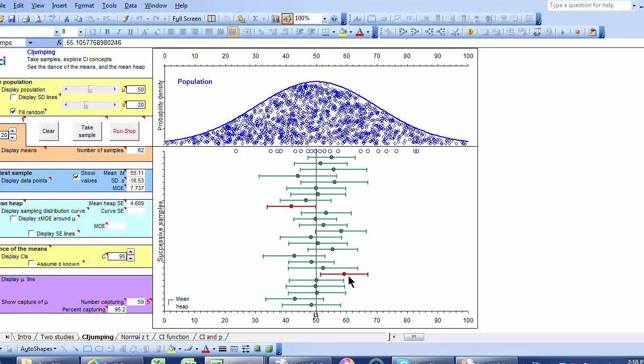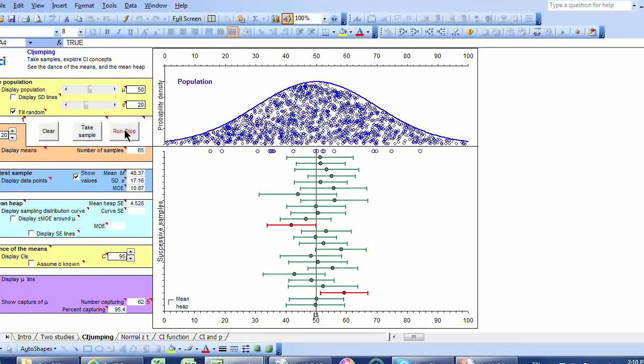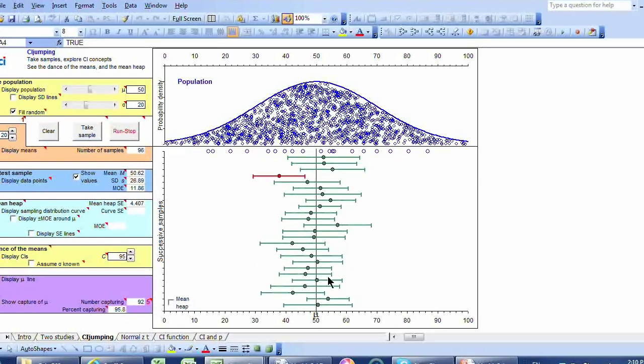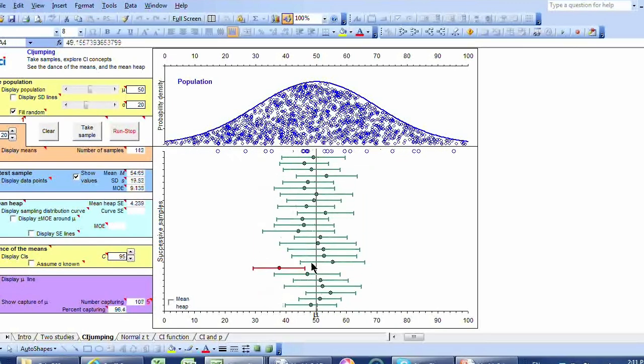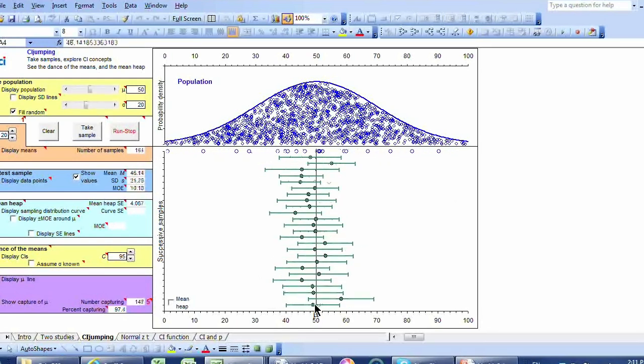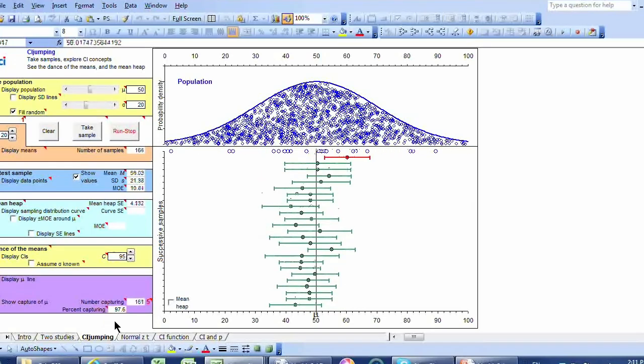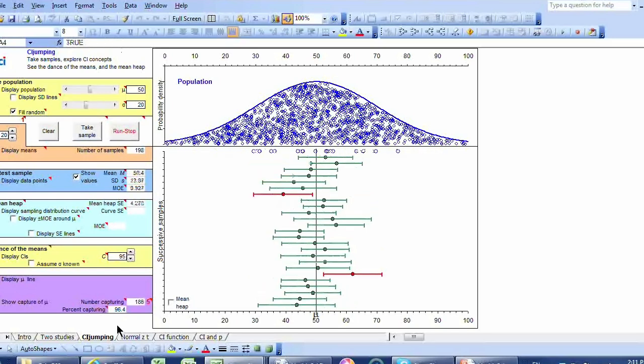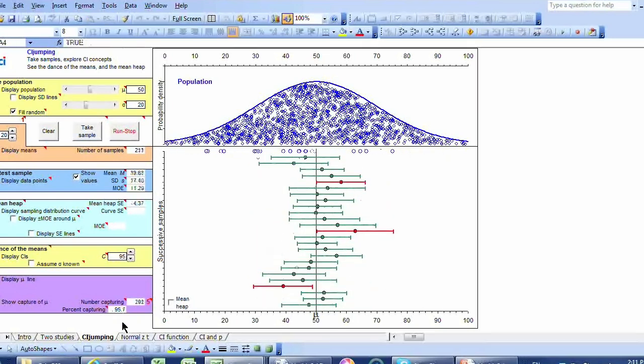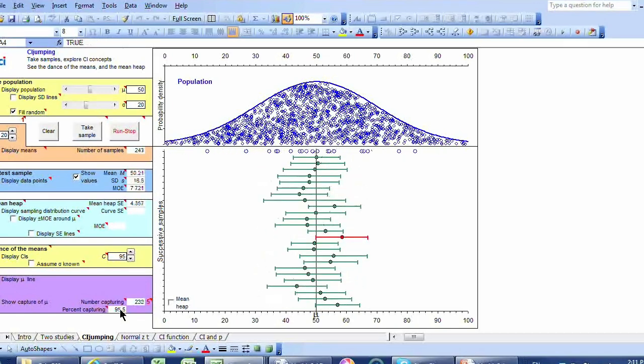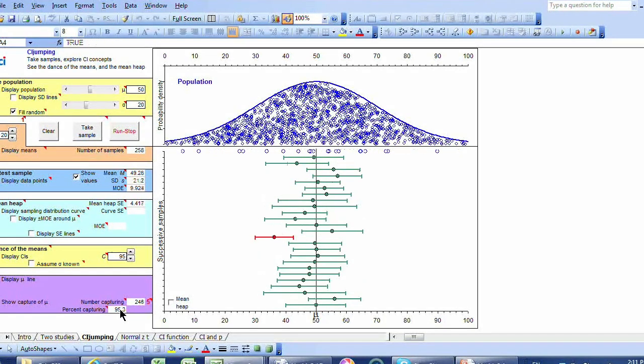And I've illustrated that here by making the ones that don't capture red. So what proportion in the long run of these will be red? You're right, 5%. In 95% of cases, these intervals will capture the value we're trying to estimate, the population mean, and in 5% they won't. So at the moment, I'm keeping count of how many we capture. I'm up around about 97%, 96%. If we left it running for 10 minutes, it would be very close to 95%. It bounces around, slowly settles down.